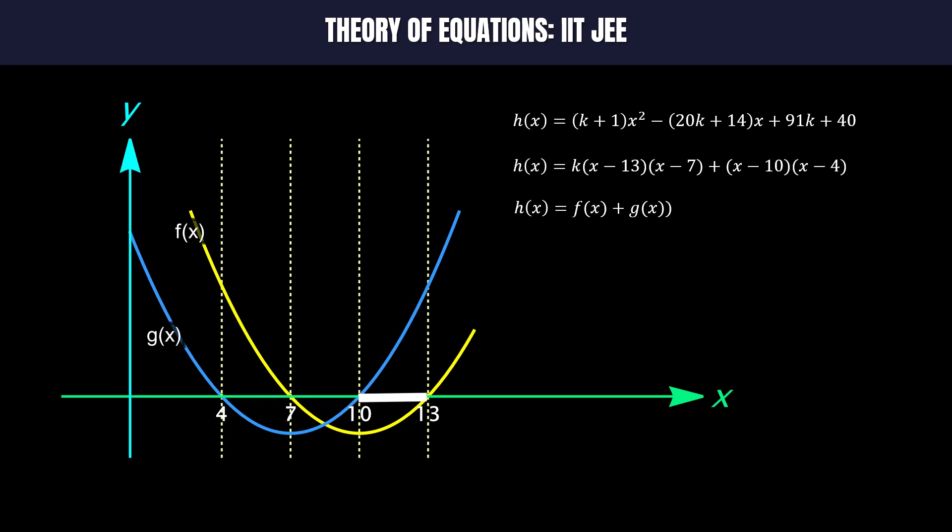Fourth, when x lies between 10 and 13. In this interval the value of h(x) may be 0 because f(x) is negative and g(x) is positive. Hence h(x) will have a root in this interval.